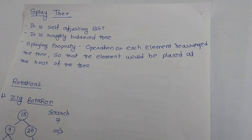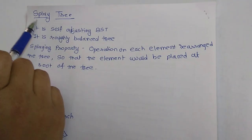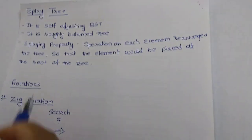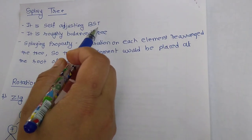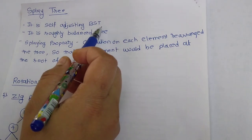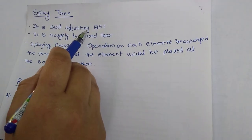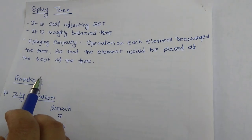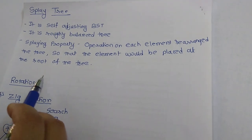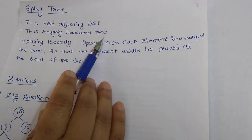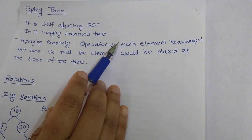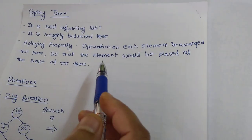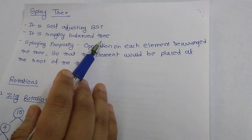Hello everyone, today's topic is Splay Tree. Splay Tree is one type of search tree. It is a self-adjusting BST, that is a binary search tree. We don't have to do any adjustment manually — rotations are there to perform the adjustments. It is a roughly balanced tree; it is not a strictly balanced tree. The strictly balanced tree is the AVL tree. So we do not have to balance it very strictly — it is a roughly balanced tree.